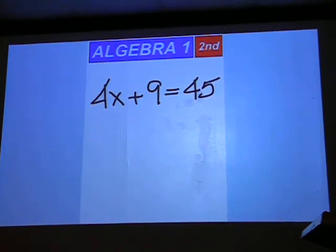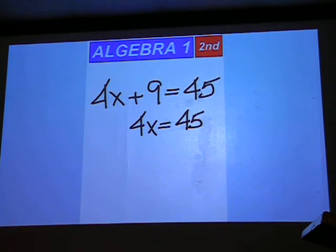4x plus 9 equals 45. You're going to keep your 4x where it's at and the 45 where it's at. But move that plus 9 away from the 4x. Put it on the right side and make it minus 9.